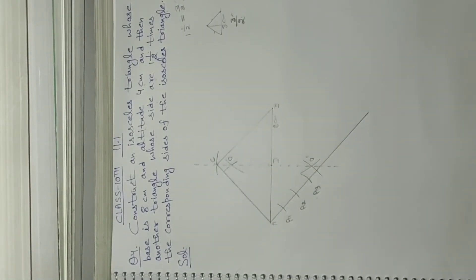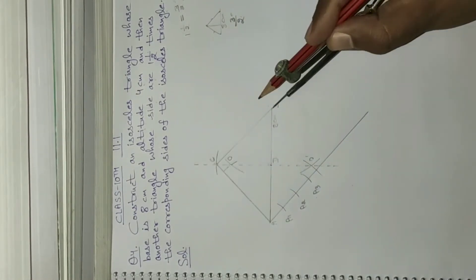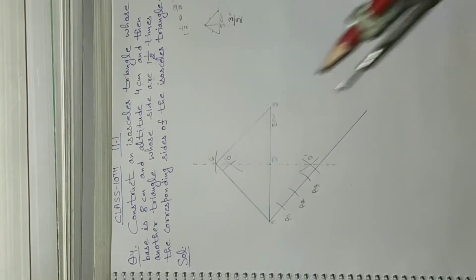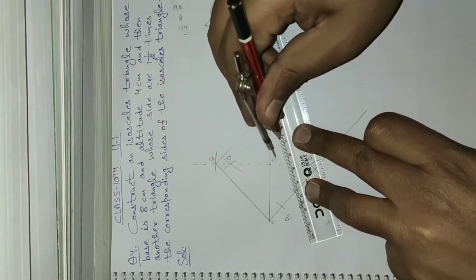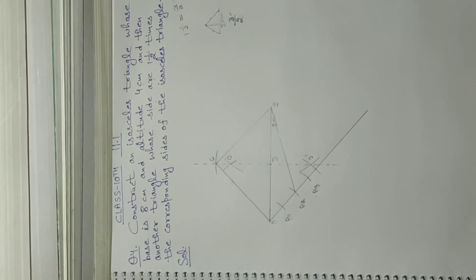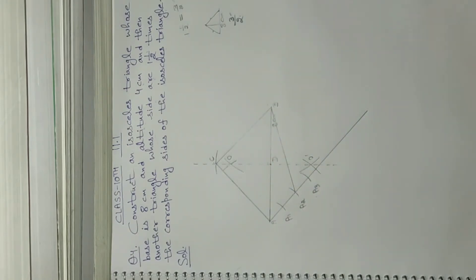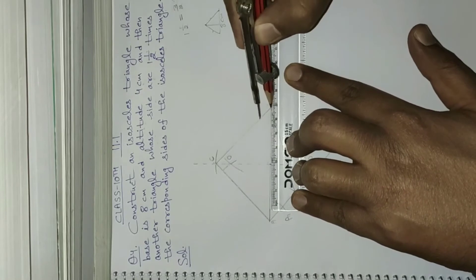Always remember: join the denominator arc with point B. Here the denominator is 2, so join arc A2 with point B. Then produce the line AB further. From arc A2, make an arc, and with the same compass opening, make an arc from arc A3.